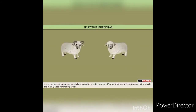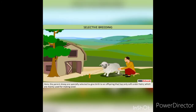Selective breeding. Here, the sheep parents are specially selected to give birth to offspring which have only soft underhairs, which are mainly used for making wool.